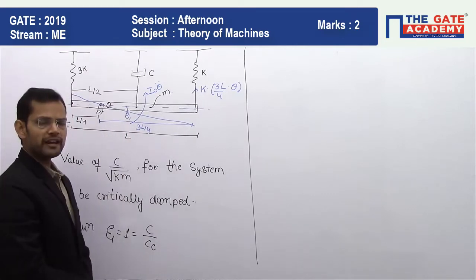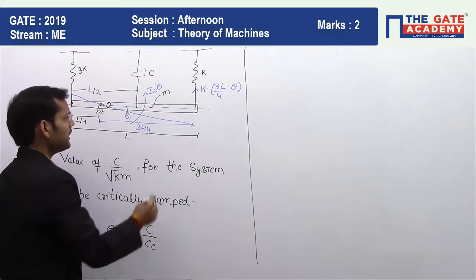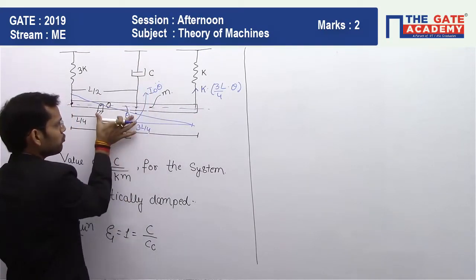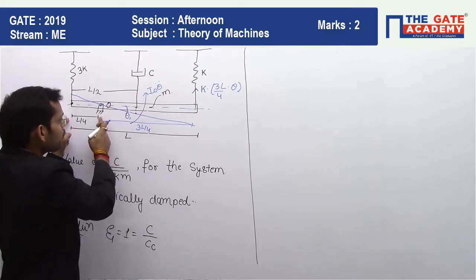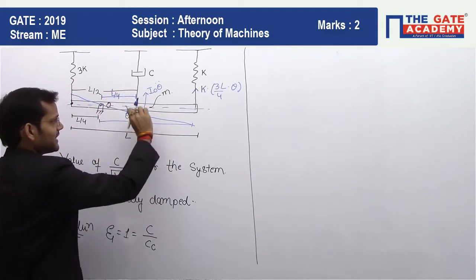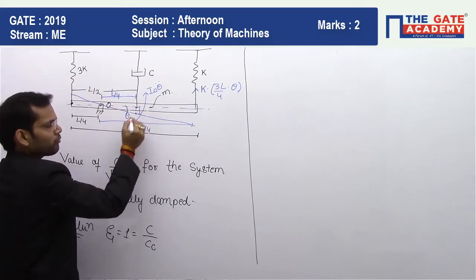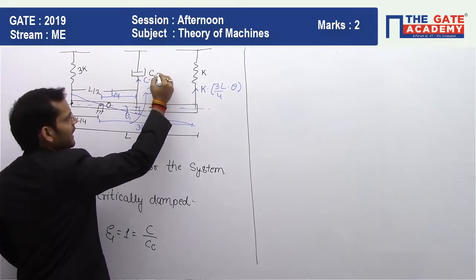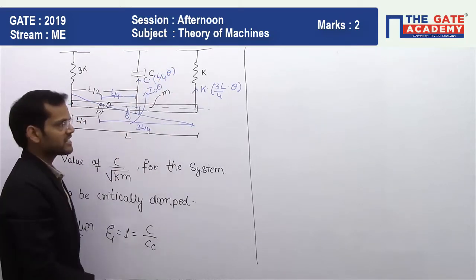Now for the damping force: damping force equals the damping coefficient multiplied by velocity. The stretch of the damper — looking at the relative displacement between its ends — the radius from O to the damper is L/2 minus L/4, which gives L/4. So the stretch equals L/4 multiplied by theta, and the velocity is L/4 multiplied by theta-dot. Therefore, the damping force equals C multiplied by L/4 multiplied by theta-dot.